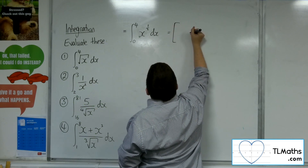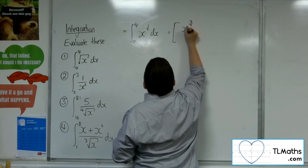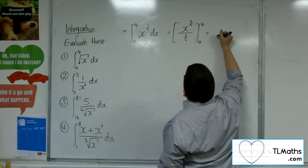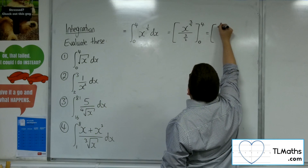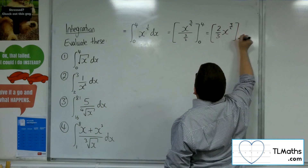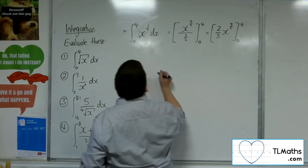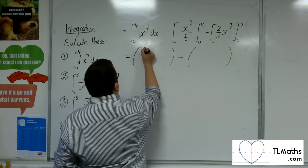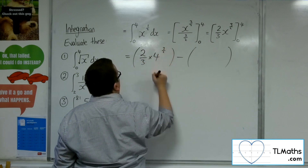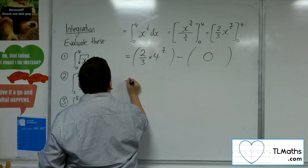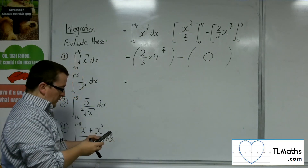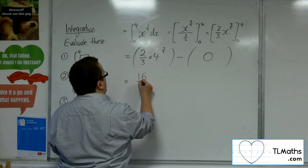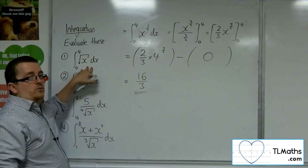So now open up the square brackets, add one to the power, divide by the new power, and I'm evaluating between zero and four. I want to tidy that up — I don't like a fraction in the denominator — so that is two thirds x to the three halves evaluated between zero and four. Substitute in the four first: two thirds times four to the three halves, and substituting in zero just gives zero. So two thirds times four to the three halves is 16 over three, and that is that integral evaluated.